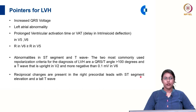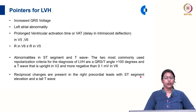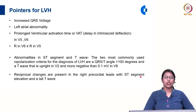Ventricular activation time is the time taken for the impulse to travel through the myocardium to reach the recording electrode. In left ventricular hypertrophy, since the thickness of the myocardium is greater, this ventricular activation time — measured from the beginning of the QRS complex to the peak of the R wave — is prolonged to more than 0.05 second, compared to the normal less than 0.05 second. The intrinsicoid deflection is also delayed, evidently seen in left precordial leads V5 and V6.